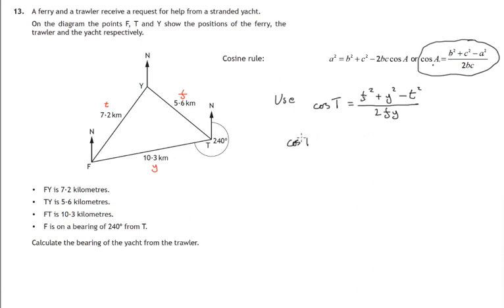The cosine of angle T, this angle here, is equal to F squared, that's 5.6 squared plus Y squared, that's 10.3 squared minus T squared, that's 7.2 squared, all divided by 2 times F, which is 5.6 times Y, which is 10.3.